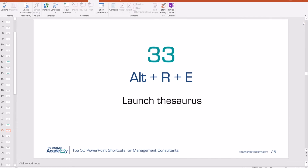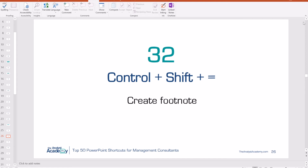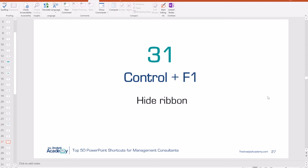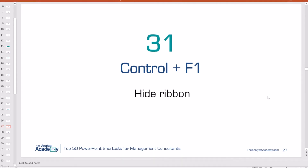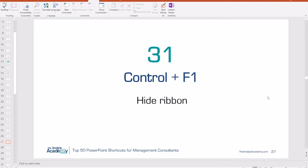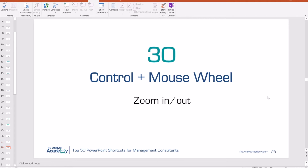Number 32: Control Shift Equal Sign. This allows you to create a footnote. Put your cursor where you want it, hit Control Shift Equal Sign, then click the number of the footnote you want — say 1 — and there it is. Number 31: Control F1 just hides the ribbon up top, giving you a little more space to work. Hit Control F1 again to bring it back.